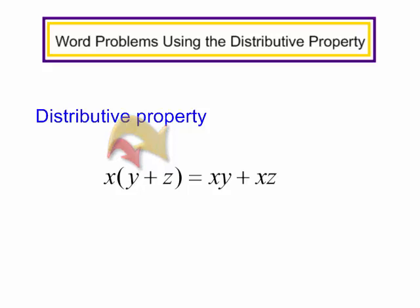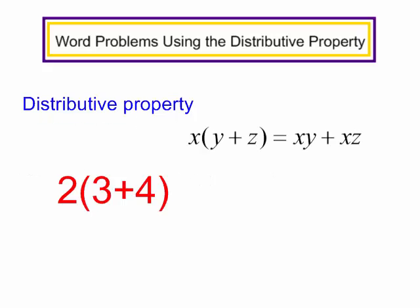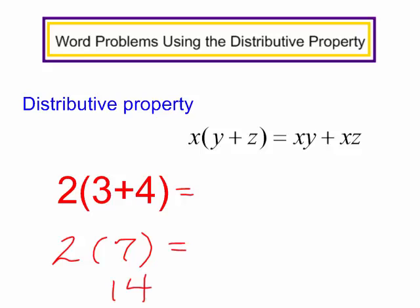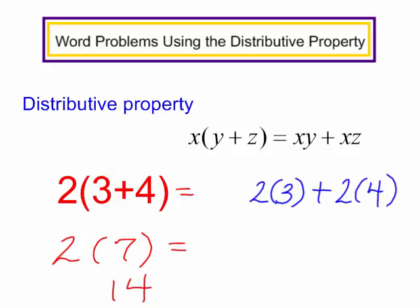Let's look at this example using numbers. I have the problem 2 times the quantity 3 plus 4. Of course, I don't need the distributive property here. In order of operations, you would do 3 plus 4, which is 7, and we know that 2 times 7 is equal to 14. We could also do this example using the distributive property: 2 times 3 plus 2 times 4. 2 times 3 is 6, 2 times 4 is 8, and 6 plus 8 is also 14.